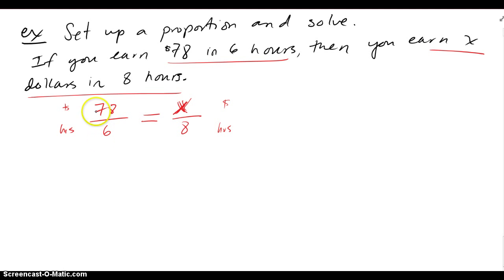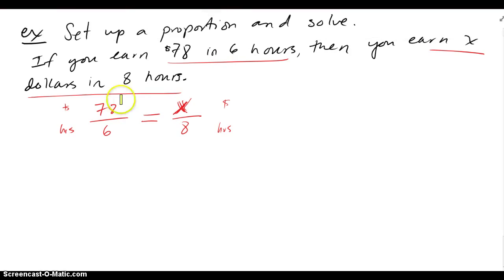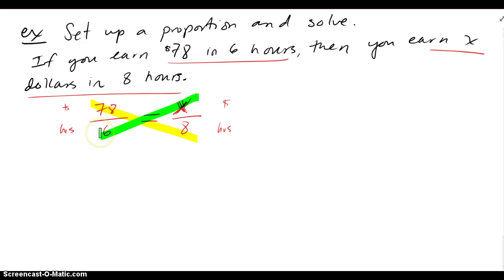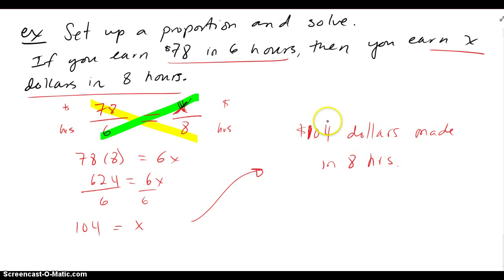That's going to equal, again, dollars over hours, and it looks like I have X dollars made for 8 hours. So there's our proportion, $78 to 6 hours. Units should match up across X dollars to 8 hours. To solve it, I know that their cross product must be equal. So we get 78 times 8 must equal 6 times X. And when we set the cross product equal to each other, multiply and solve for X, we get $104 made in the 8 hours.